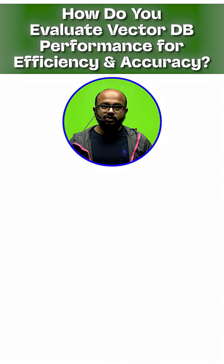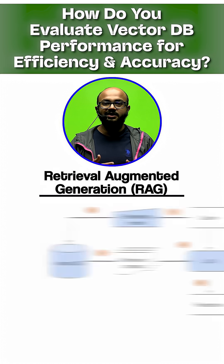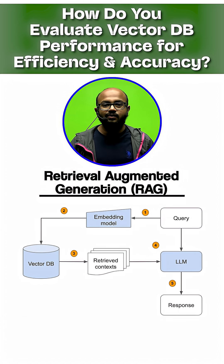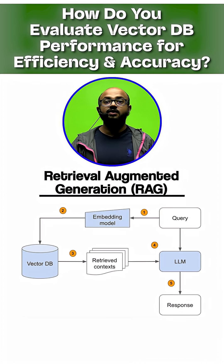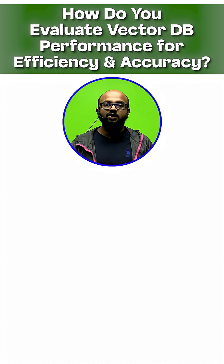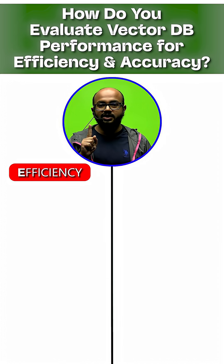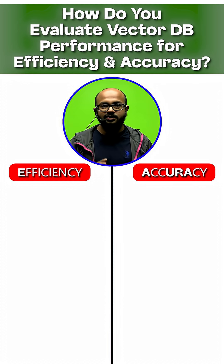Your answer should be: for GenAI, especially RAG, it is critical to evaluate a vector database. We focus on two core areas — one, efficiency; second, accuracy.